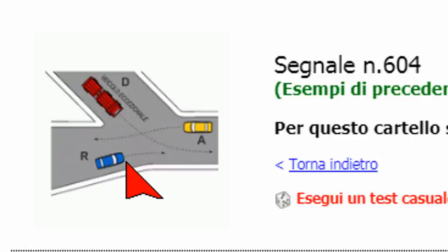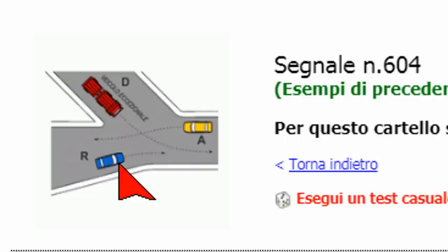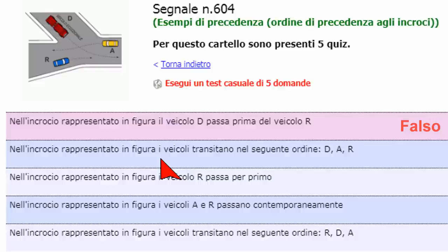Il veicolo blu può partire per primo perché ha la destra libera. Una volta partito il veicolo blu, parte il veicolo rosso e per ultimo il veicolo giallo. Le risposte al quiz: il veicolo D non passa prima di R — è assolutamente falso. L'ordine D, A, R è sbagliato. Il veicolo R passa per primo perché ha la destra libera — corretto. L'ordine corretto è R, D, A.